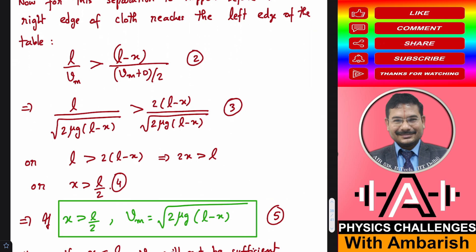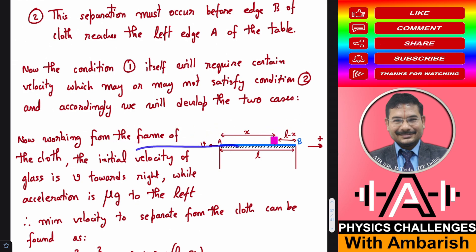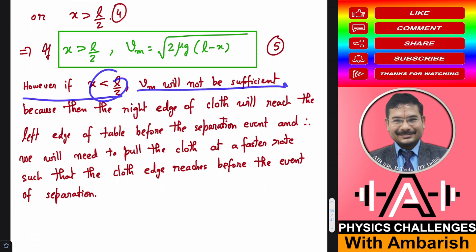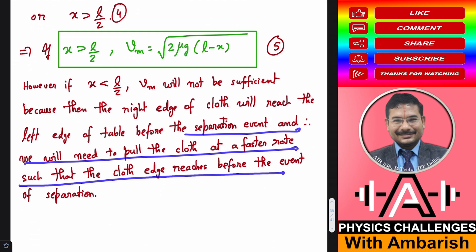Now, what happens if x is less than L/2? If we give just vm, the separation would occur beyond the edge of the table — in an imaginary extension — and that won't work. We need the separation to happen within the actual table region. So if x is less than L/2, vm is not sufficient, and we must pull the cloth faster so the cloth edge passes the table edge before the separation event.